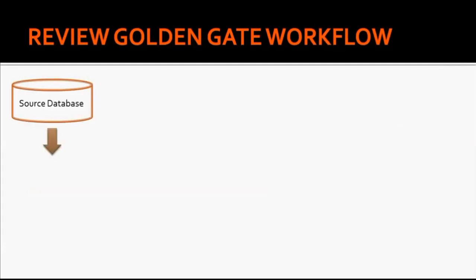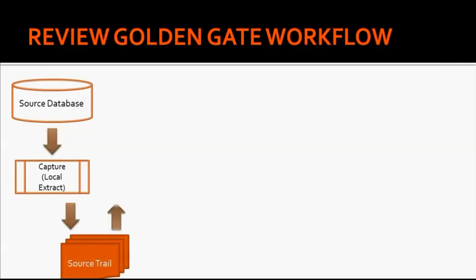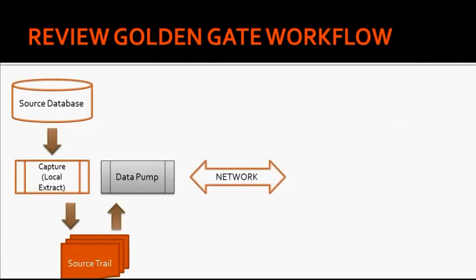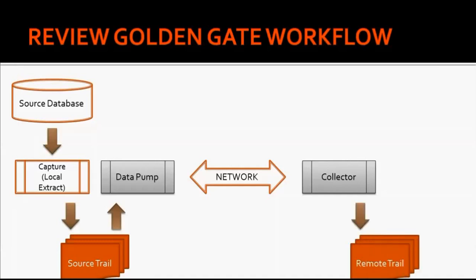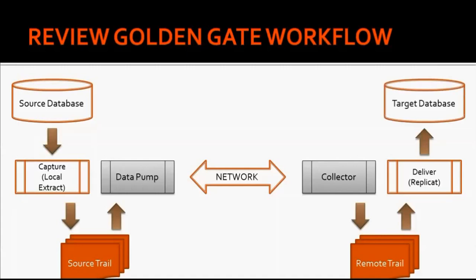Let us again review the Golden Gate workflow. We have the source database. From the source database, the capture process extracts the changes and writes to source trail files. Source trail files are then given to the data pump process. The data pump process sends them over the network to the target server. On the target server, the collector process listens to incoming requests and writes to the remote trail files. The remote trail files and source trail files are exactly the same. From the remote trail file, the delivery or replicat process reads the data and writes it onto the target database.